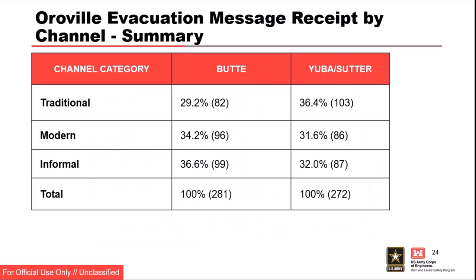You can see the value of that in the Butte County, Yuba, and Sutter County data. Some people received warnings through traditional methods — radio and TV. Some through informal channels — a neighbor knocks on your door or grandma calls and says you need to get out. Some through modern methods like social media. In Butte County, immediately downstream, the informal channel is quite a bit higher — a lot of people receiving notice from neighbors or friends and family. The two counties further downstream got their information more from TV and radio. If the message isn't well developed or you don't have all the information you want before packing up your family and leaving, you go turn on the TV and try to find more information.